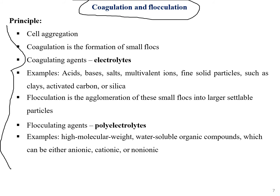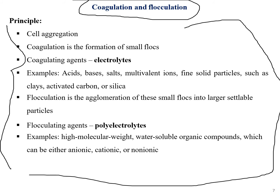Moving on to the next topic: coagulation and flocculation, which is the third step in downstream processing or the purification process. These two processes share a similar concept but have minor differences. Both involve cell aggregation — the accumulation or binding of large numbers of cells at a particular place.